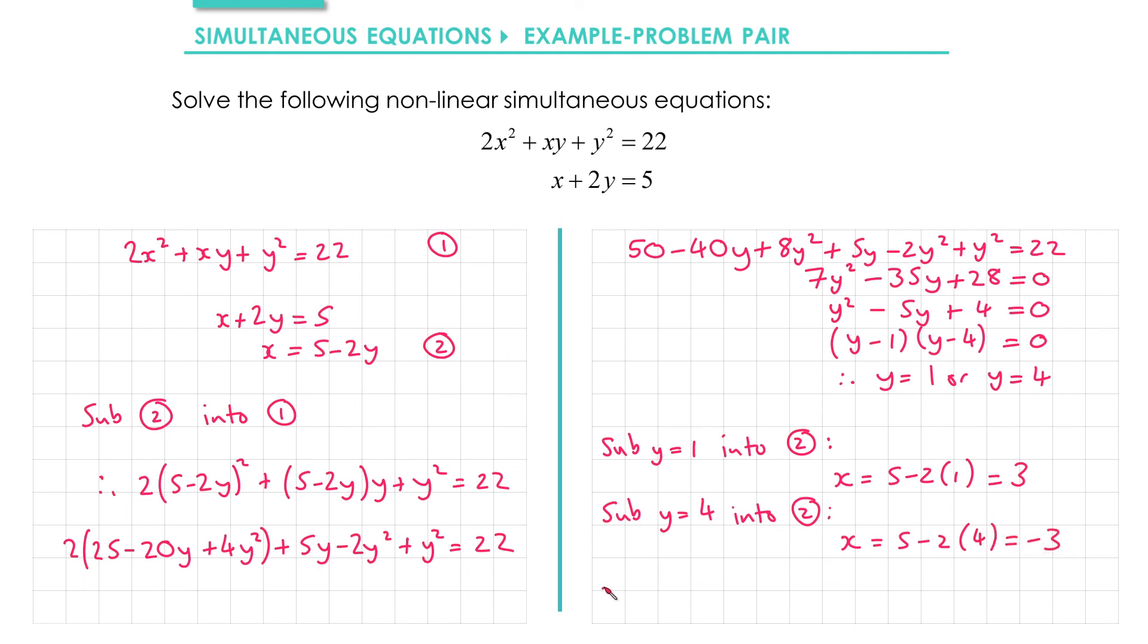Don't forget to pair up your solutions. So we've got x = 3 paired with y = 1. And we've got x = -3 paired up with y = 4.